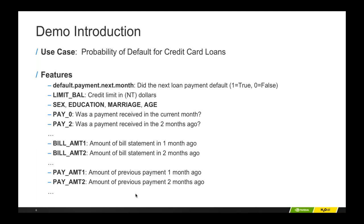The way we're going to do this today — like a cooking show — you'll see us set the model up, and then we're going to use a pre-baked model I ran for about 20 minutes this morning. Here is the dataset we're going to use: the credit card default dataset from Kaggle, where the target is whether someone defaulted on their credit card payment in the next month. The inputs include credit limit in NT dollars — new Taiwanese dollars — so this is a dataset from Taiwan.